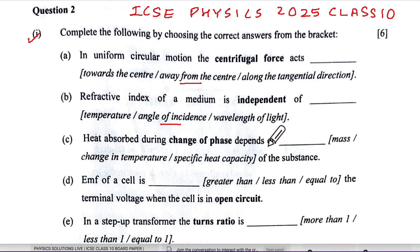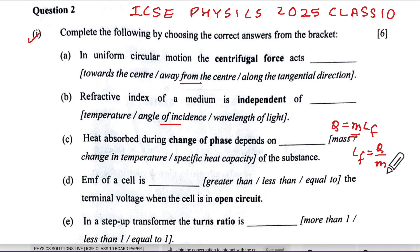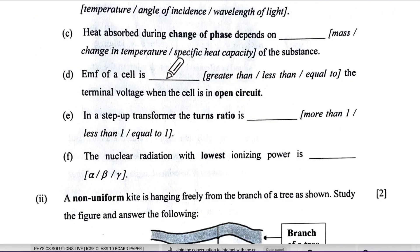Part c: heat absorbed during the change of phase depends upon latent heat, and latent heat depends upon mass. The latent heat formula is Q = m × L, so latent heat depends on the heat absorbed and also on mass — that is the correct option. Part d: the EMF of a cell is greater than, less than, or equal to terminal voltage when the cell is in open circuit.